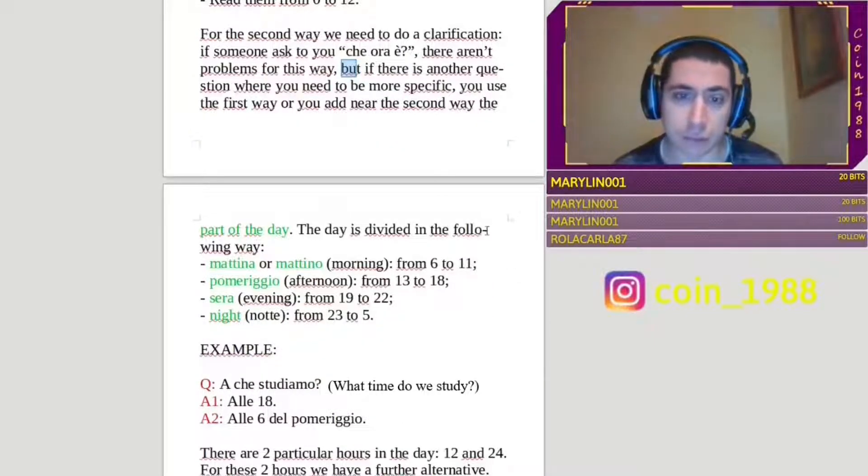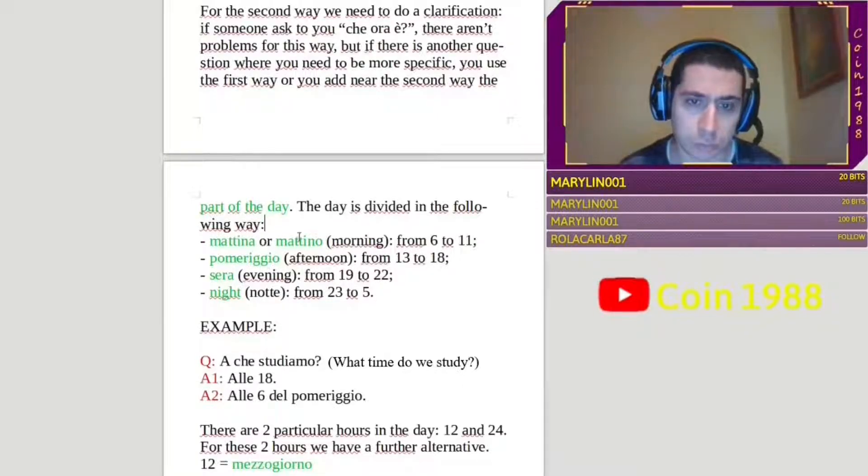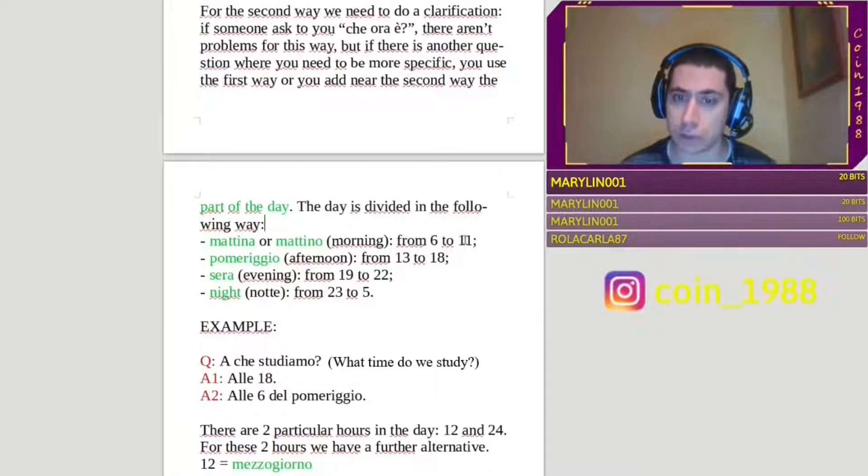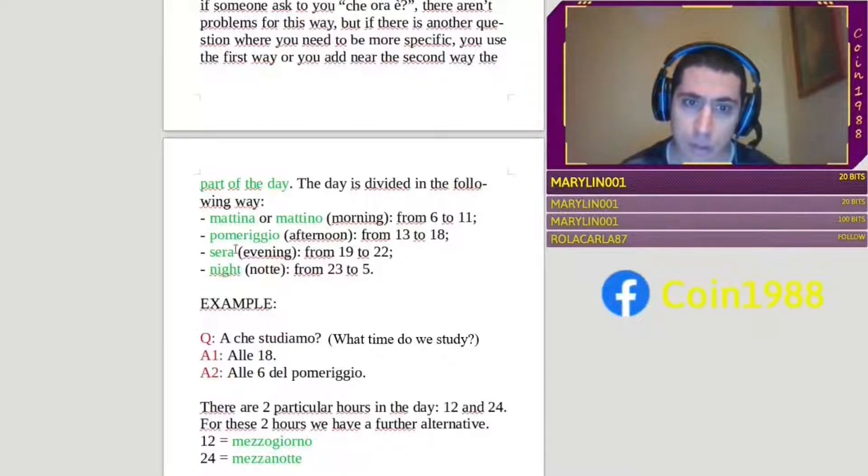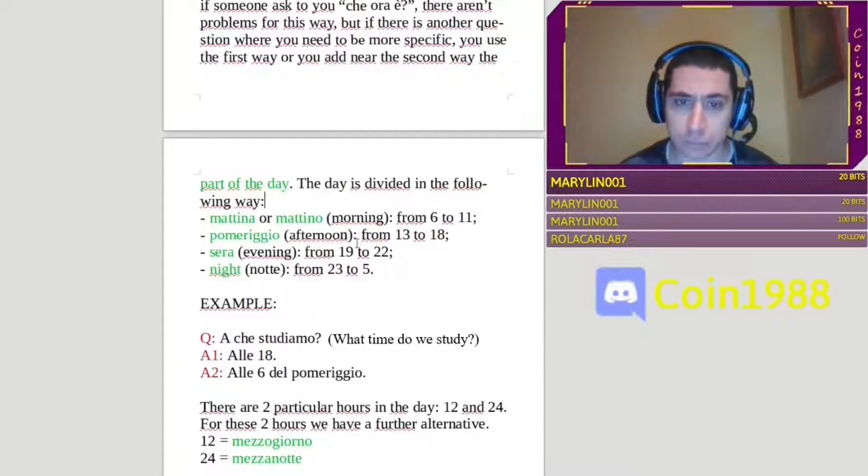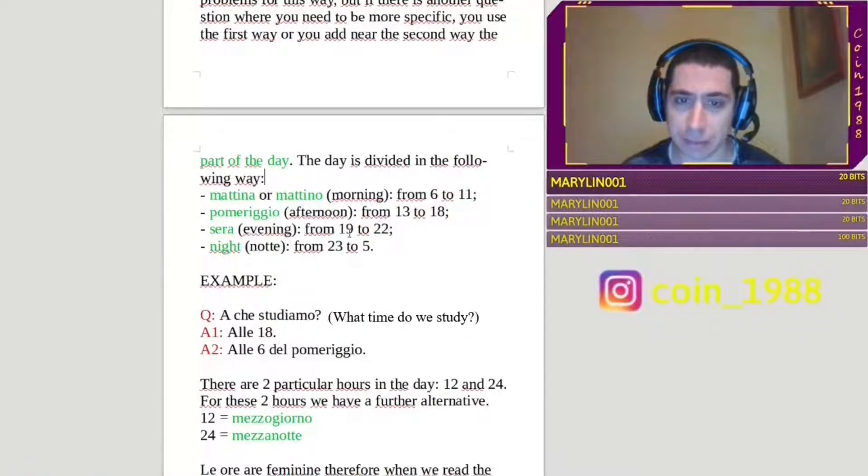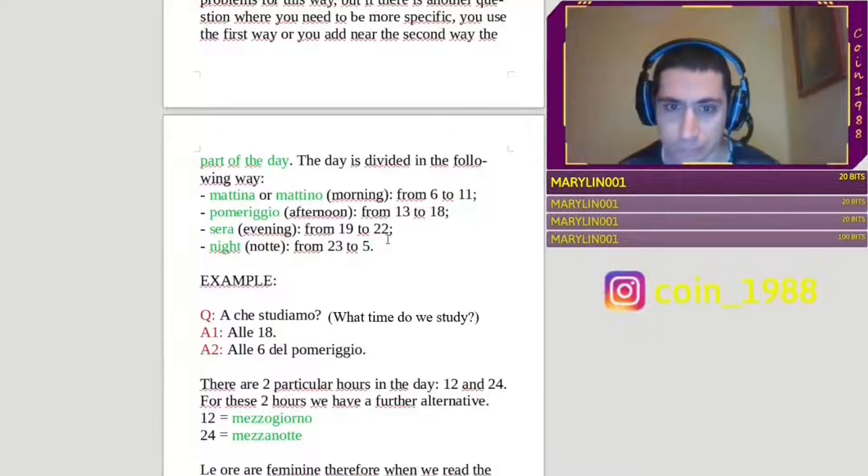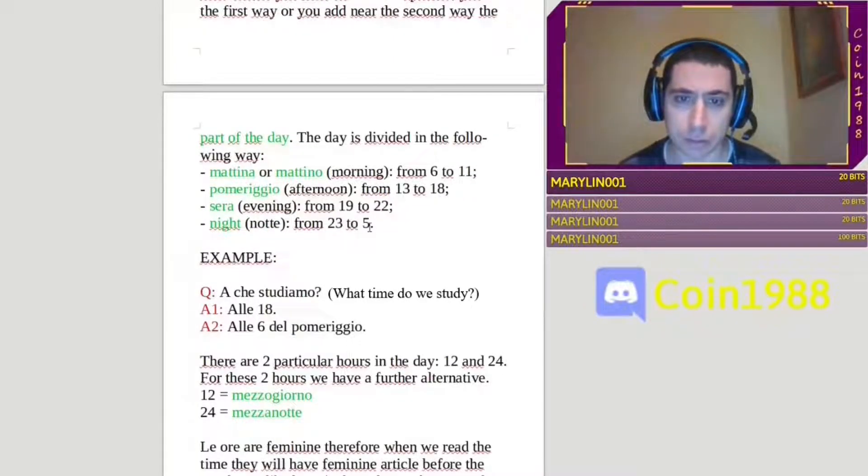The day is divided in the following way. Mattina or mattino, you can choose what you want. We can say the most used is mattina, but also if you say mattino isn't wrong. Mattina or mattino means morning, it goes from 6 to 11. Pomeriggio is the afternoon, it goes from 13 to 18. Sera, that is evening, it goes from 19 to 22. And night, that is notte, from 23 to 5.